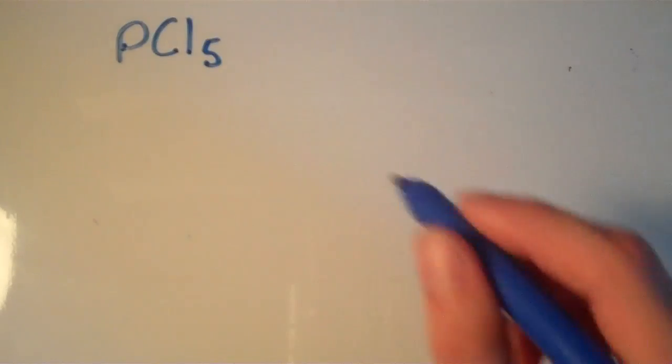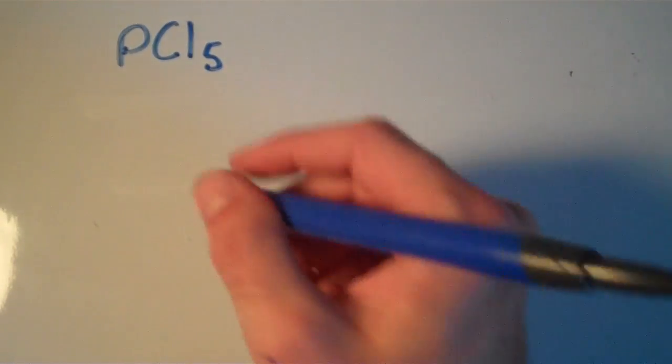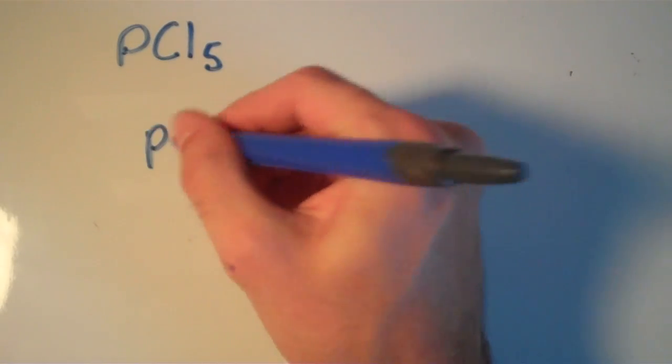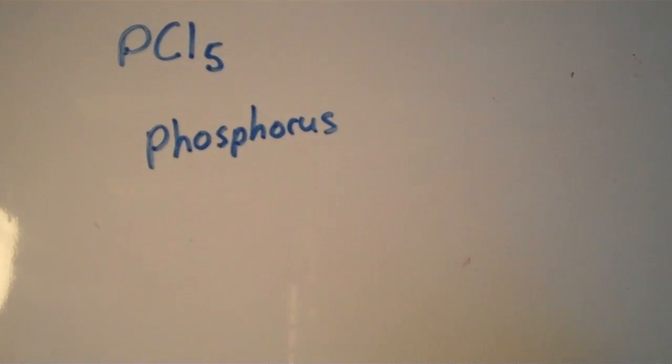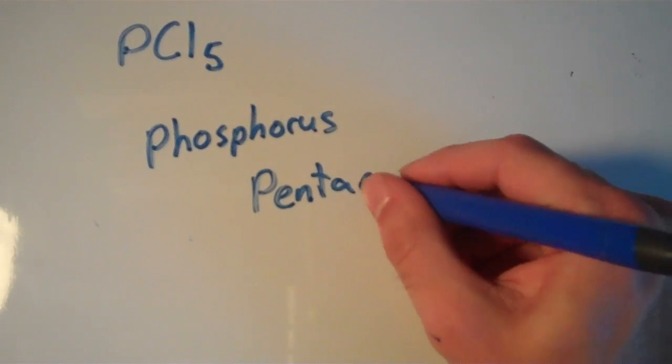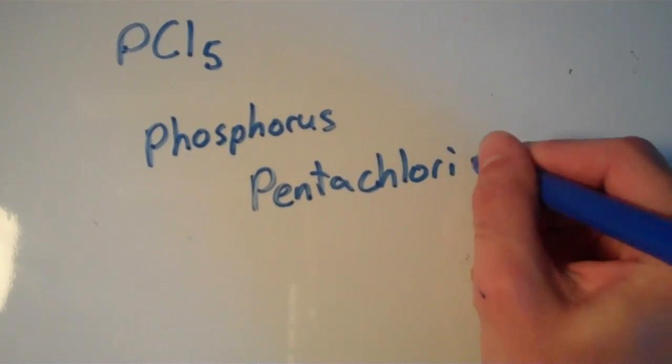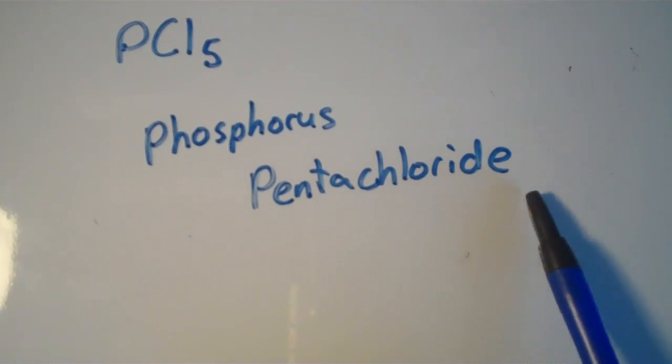PCl5. What is the formula for PCl5? It looks like we have phosphorous and we have chlorine, so it's going to be phosphorous. And we wouldn't call it monophosphorous, because for the first element we omit the prefix mono. And it looks like we have five chlorines, so this is going to be phosphorous pentachloride. Remember, for the second element, we have the base name and the suffix -ide.